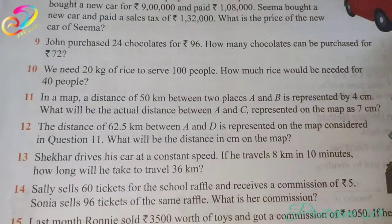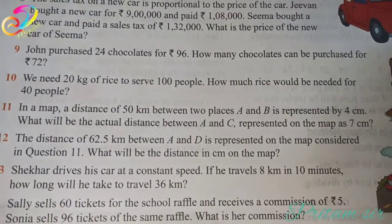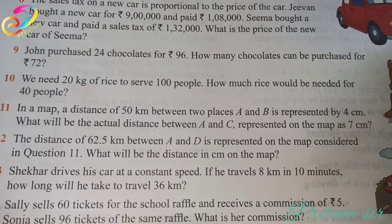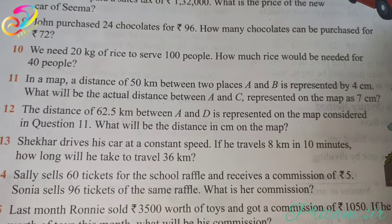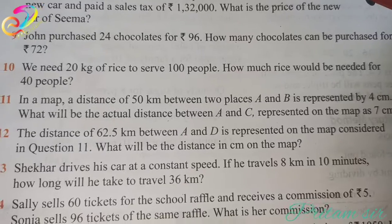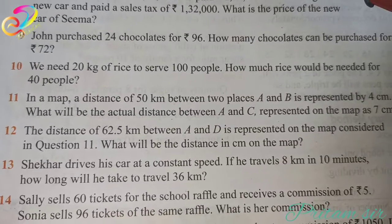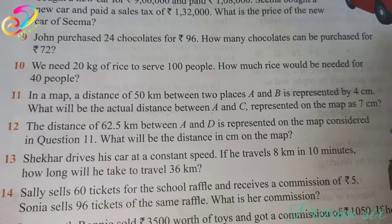Next, question number 11. In a map, the distance of 50 kilometer between two places A and B is represented by 4 centimeter. What will be the actual distance between A and C, represented on the map as 7 centimeter?